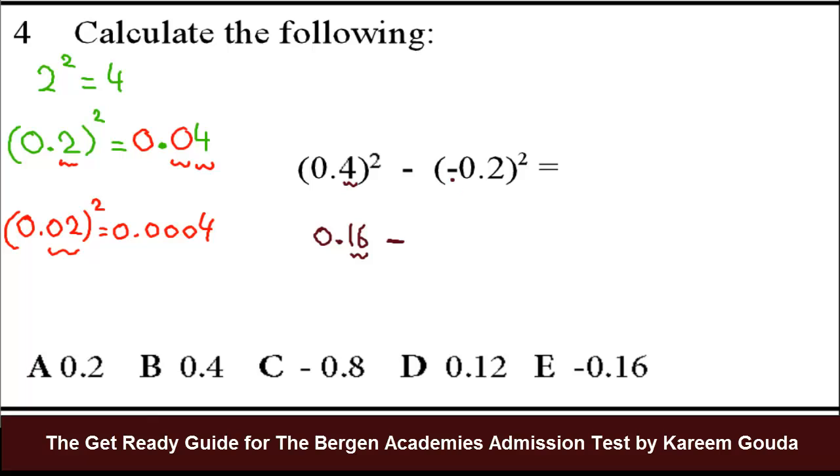Minus. Remember, when you have a negative number squared, the answer is positive because negative times negative gives you positive. So negative 0.2 squared is the same as saying 0.2 squared. Now we already got from here that 0.2 squared equals 0.04, so we know it's minus 0.04. Now subtract, we get 0.12. Answer is D.